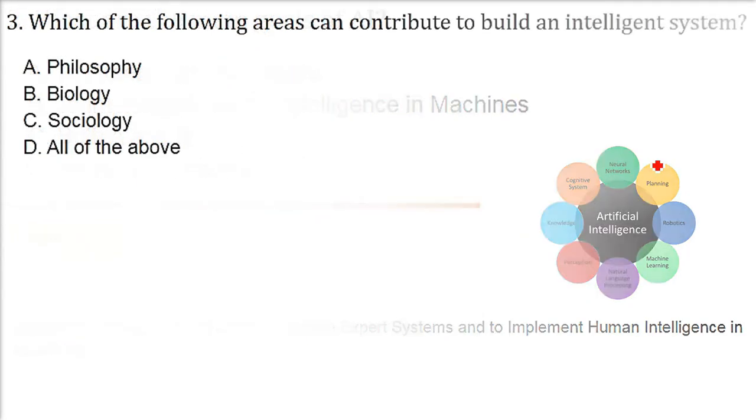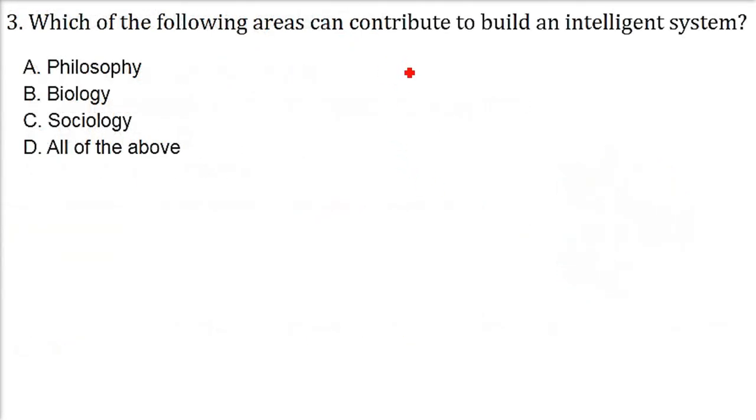Which of the following areas can contribute to build an intelligent system? So to make a system intelligent like us, like human beings, like human brain can think, there are various fields which can contribute. Philosophy, biology, sociology, all of these. The answer is all of these.